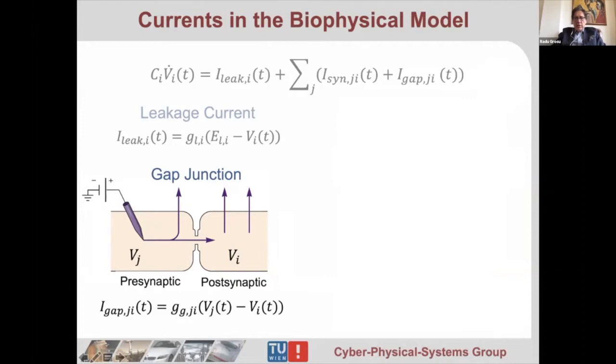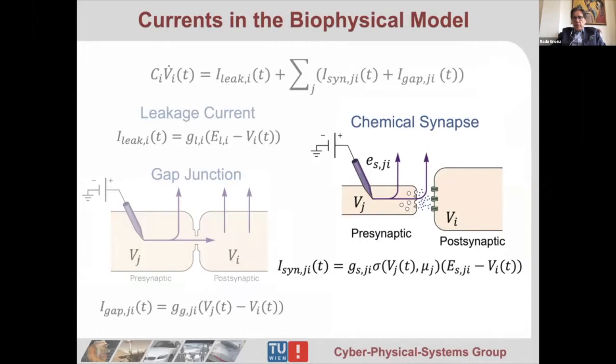The most important are the chemical synapses because this is where learning happens. You have these bubbles filled with neurotransmitters that come through the axon to the synapse. There they bind to the synapse, open, and release neurotransmitters. These neurotransmitters then go and bind to the receptors of these channels, and when they bind to the channels, they open them.